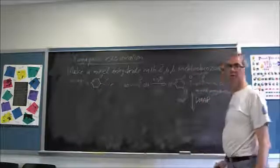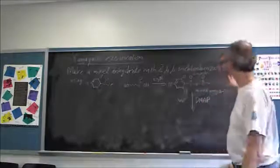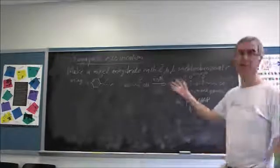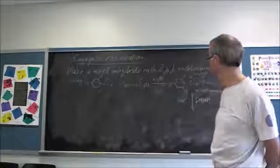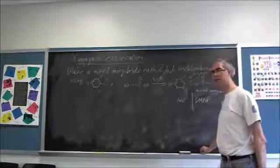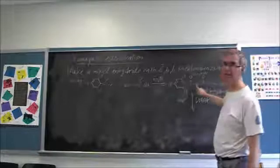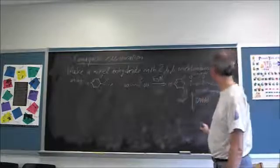And we just saw what an alcohol and an anhydride do in the presence of DMAP. That was in the acetylation reaction I just covered. So you get an ester formed. Only this time, the alcohol is attached to the anhydride.